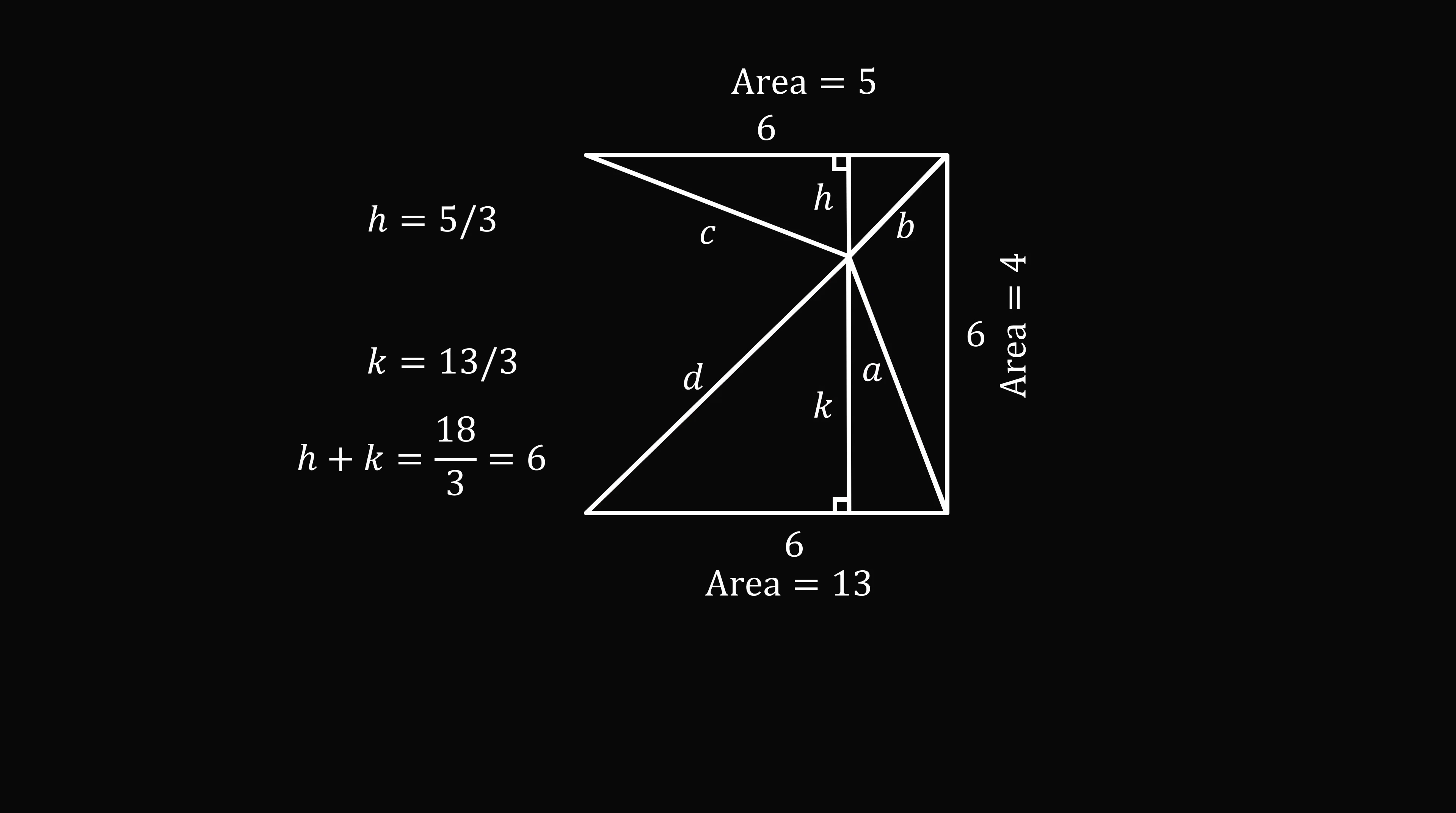If we add H and K, we get 18 over 3, which is exactly equal to 6. So we figured out that the two lines that are horizontal, that are 6, also have a vertical distance of 6 between them, and they're parallel. And this means we can construct this length, and we know that it must be equal to 6.